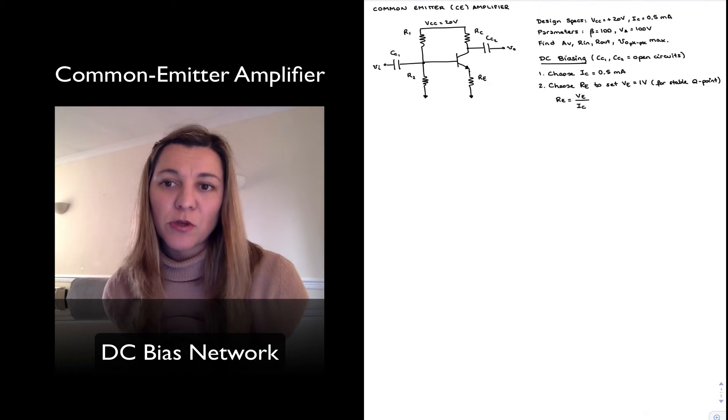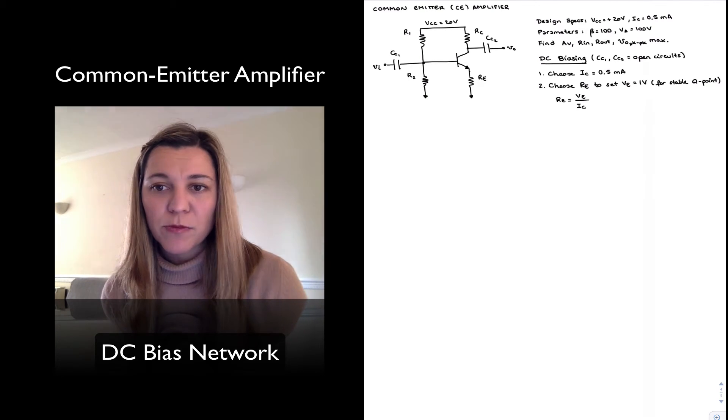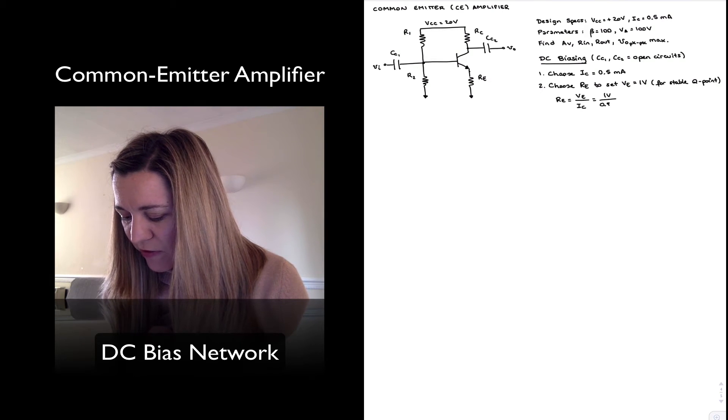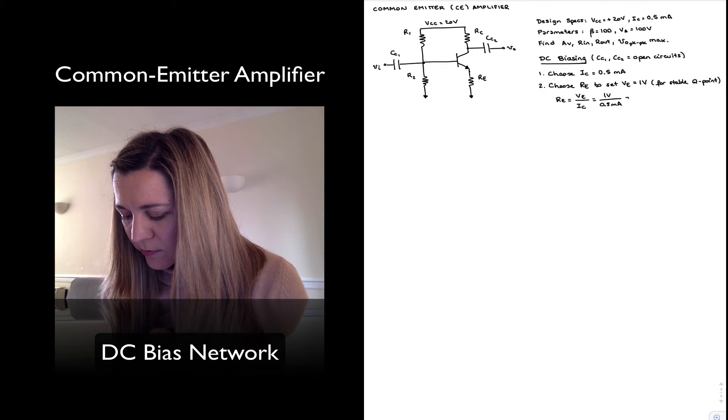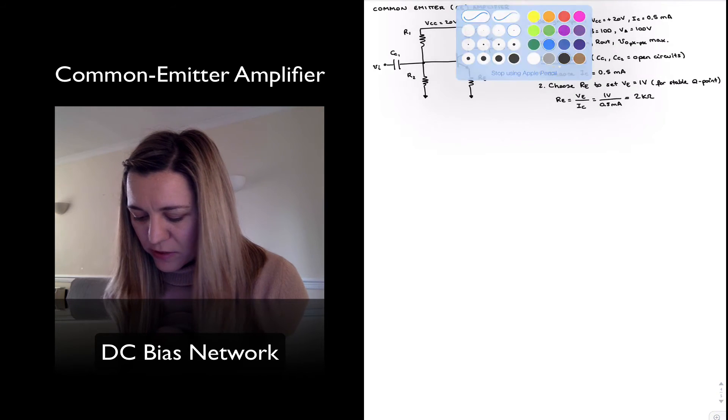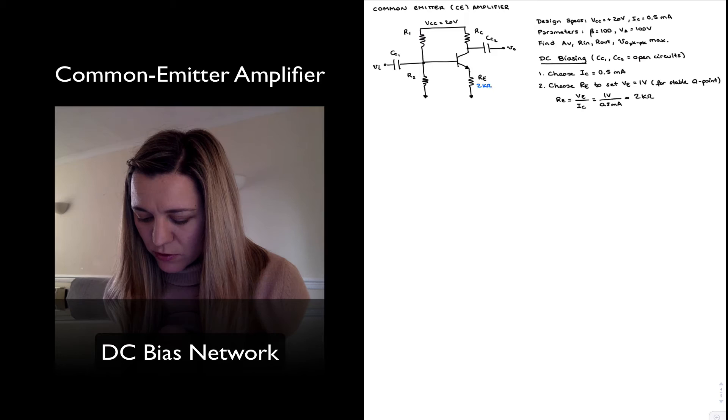And so RE by Ohm's law is equal to the voltage on the emitter divided by the current through the emitter resistor, which is approximately the emitter current, which is going to be approximately equal to the collector current. And so this will be one volt over 0.5 milliamps or two kilo ohms. So we have the value for our emitter resistor, two kilo ohms.